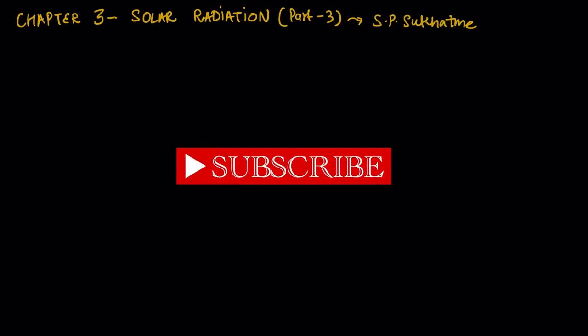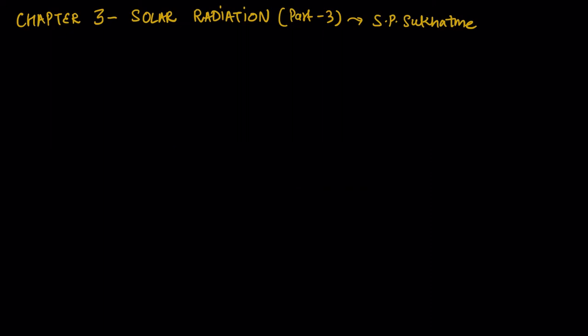Hello, welcome to the channel. In today's lecture we will continue our lecture series on solar radiation. The reference book I am considering is S.P. Sukhatme. This is Part 3 of the lecture series. Today we will study about air mass — what is air mass and how it influences the intensity of solar radiation. Before going into detail, let us first discuss what is beam radiation and what is diffuse radiation.